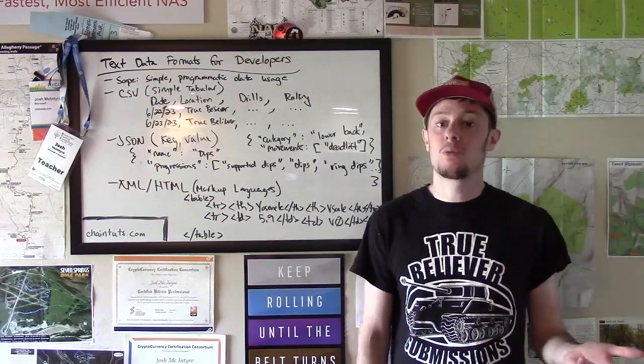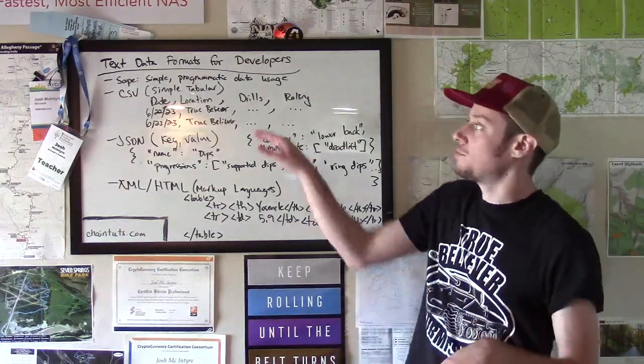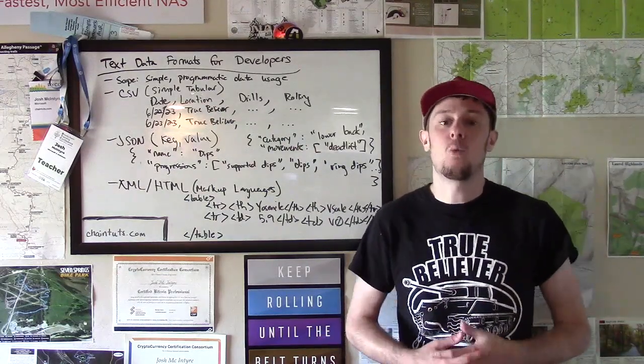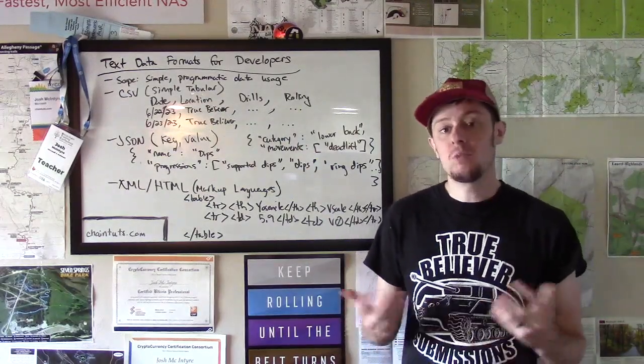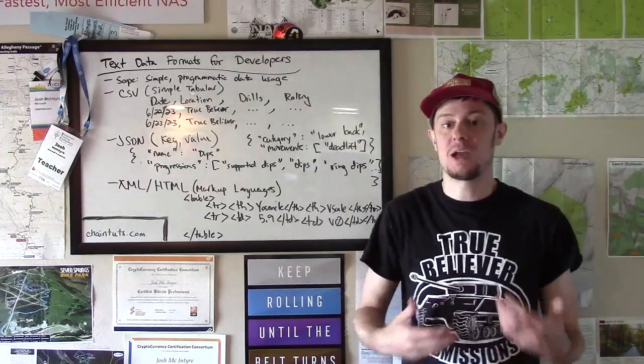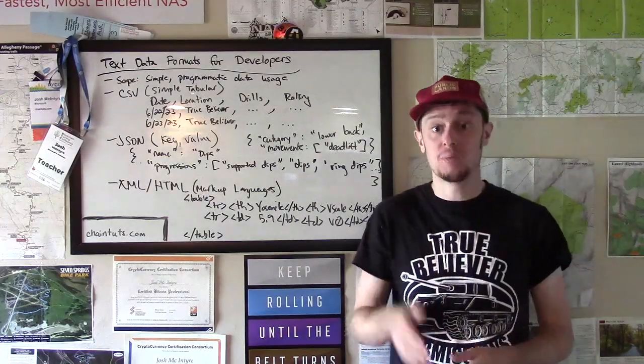Now the first type that we're going to talk about is a simple tabular or table-based way of storing data. One of the most common formats is CSV or comma separated value. So for this we have a simple text file and we have a header row that has information about what each column contains.